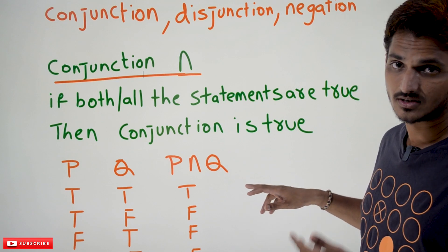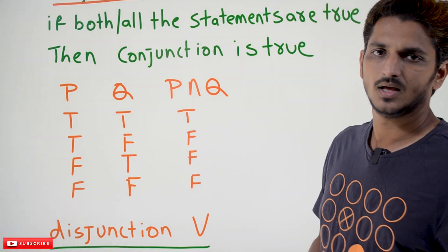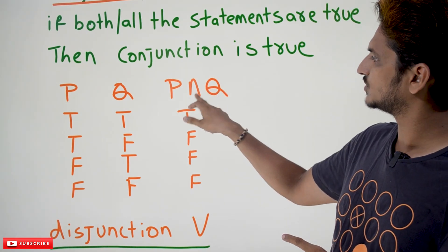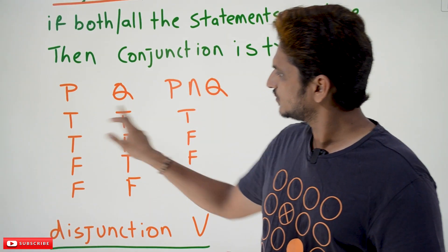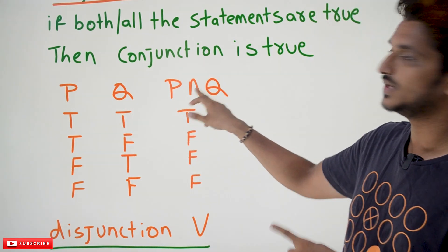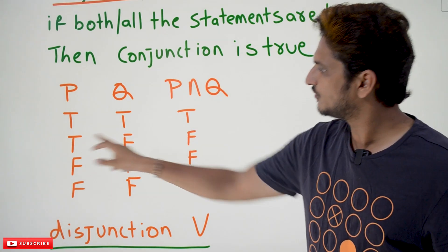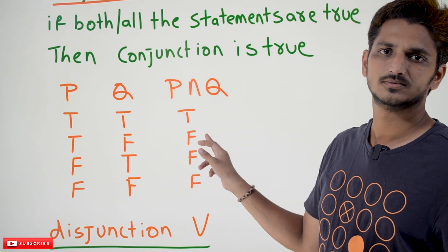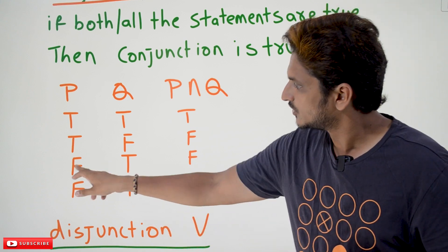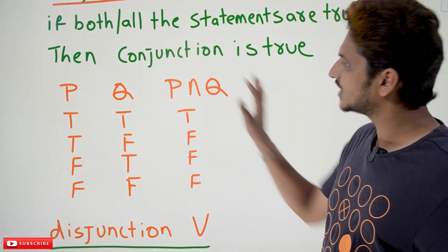Now let's check the truth table for conjunction. Let's take two statements P and Q. P ∧ Q: when P is true and Q is true, both statements are true, so P ∧ Q is true. When P is true and Q is false, P ∧ Q is false — because the condition says both should be true. When P is false and Q is true, false. When P is false and Q is false, false. This is the truth table for conjunction.